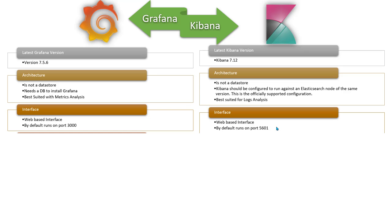Both Grafana and Kibana provide a web interface. By default Grafana runs on port 3000, and by default Kibana runs on port 5601. Neither of them has a thick client — both are web-based interfaces, which are very powerful and don't require you to install any additional software. Once you have installed Grafana or Kibana, all users with access to that web interface will be able to use it.